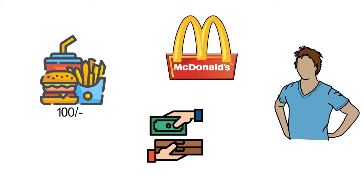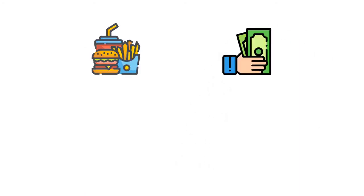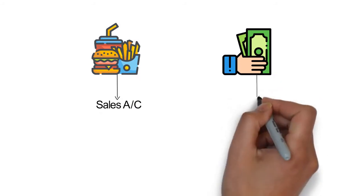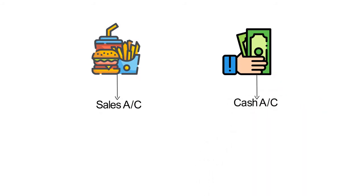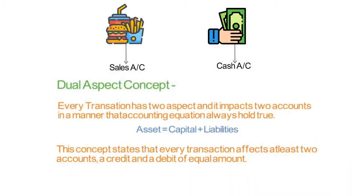He suddenly realized that each transaction was an exchange — he was giving a burger and taking cash. So two accounts are affected here: the sale of those burgers will be recorded in the sales account, and the cash received will be recorded in the cash account. From this example, every transaction affects two accounts — a debit and a credit.